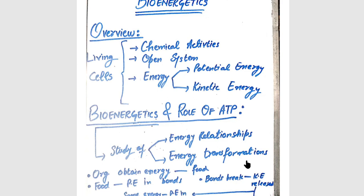For example, we have learned that living cells have two types of energy: one is potential energy and one is kinetic energy. When these are transformed or converted in living organisms, the study of that is called Bioenergetics.